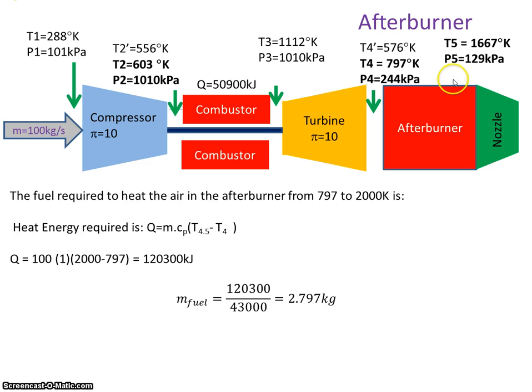The fuel required—well, the air going in is 797 degrees Kelvin. It's coming out at 2000 degrees Kelvin. So there's the change in temperature. There's the mass. And if we assume that the specific heat capacity at constant pressure is 1 kilojoule per kilogram, I can see that the amount of fuel energy required is this figure here.